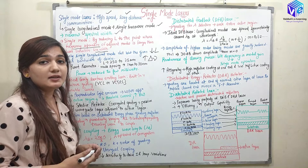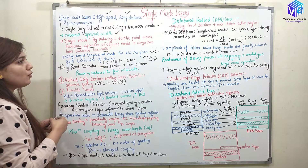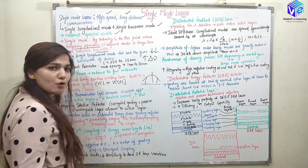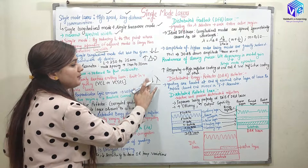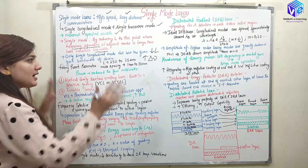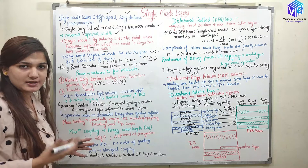Let's understand this with an example using the Fabry-Perot resonator. If the length is 250 micrometers, the mode spacing is 1 nanometer. But if I decrease the length to 25 micrometers, mode spacing increases to 10 nanometers — increased 10 times. However, the power is also reduced to only a few milliwatts, making fabrication really complex.